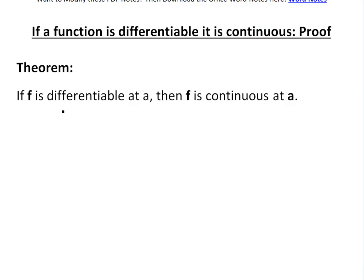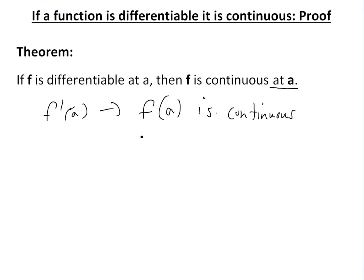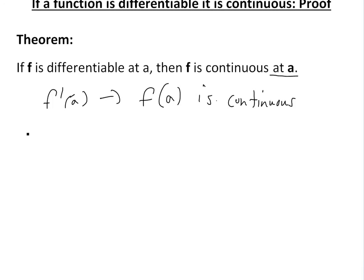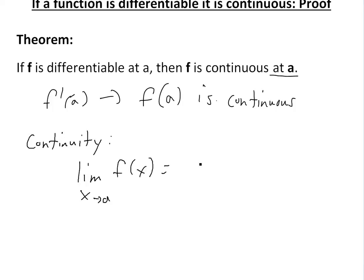The theorem states: if the function f is differentiable at a, then f is also continuous at a. In other words, if the derivative f prime of a exists, then f is continuous at a. Recall that the definition of continuity is: the limit as x approaches a of f(x) equals f(a).